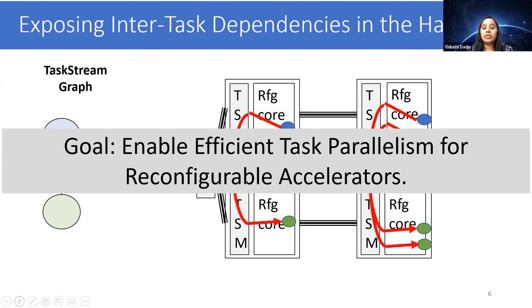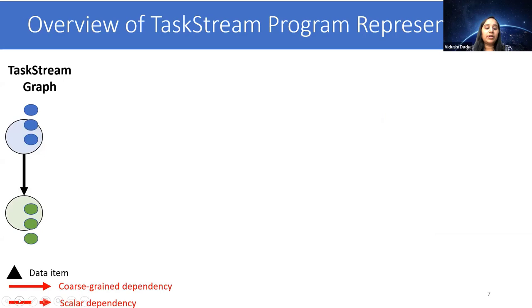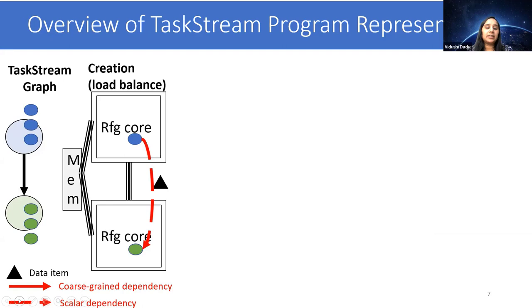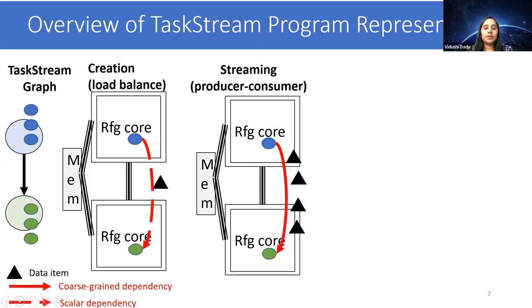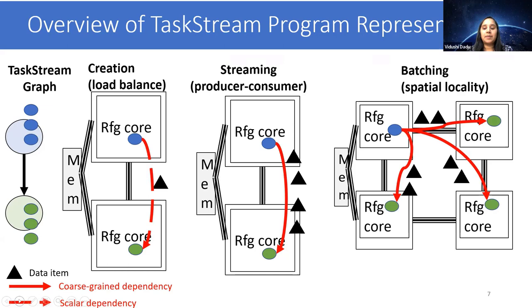We developed a novel representation of programs called TaskStream to enable load balance and locality optimizations. For load balance, we have a creation edge where the child task is created by the parent and scheduled for balanced load. In the presence of producer-consumer relationships, the parent and child tasks are scheduled together, and the data is streamed through them. In the presence of coarse-grained data reuse, the tasks may be dynamically batched, and the data may be multicast to them.